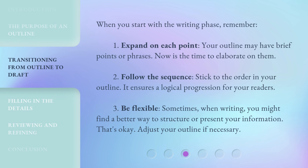When you start with the writing phase, remember these tips. First, expand on each point — your outline may have brief points or phrases, and now is the time to elaborate on them. Second, follow the sequence and stick to the order in your outline; it ensures a logical progression for your readers. Third, be flexible: sometimes when writing, you might find a better way to structure or present your information. That's okay — adjust your outline if necessary.